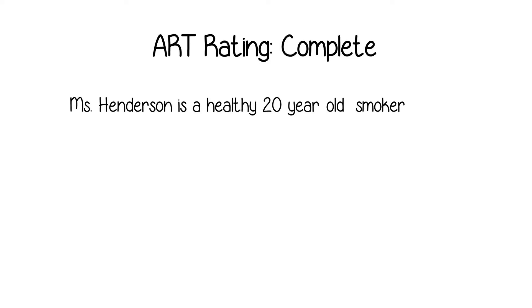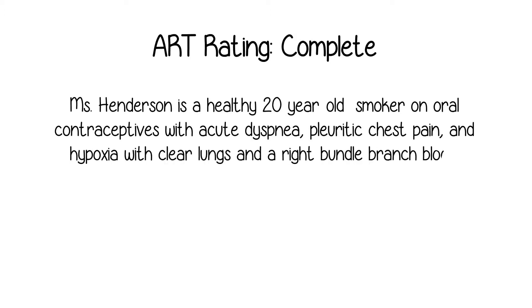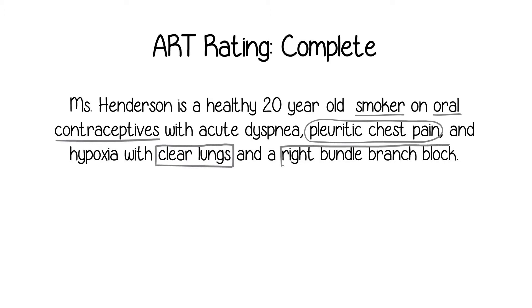This is an example of a high performer, which you would mark as complete on the ART. Ms. Henderson is a healthy 20-year-old smoker on oral contraceptives with acute dyspnea, pleuritic chest pain and hypoxia with clear lungs and a right bundle branch block. The high performer gives a concise summary with patient information such as being a smoker using oral contraceptives, describing symptom information such as pleuritic chest pain, and including highly selected data such as lung exam and conduction system changes. This problem representation allows the listener to trigger the most likely diagnosis of pulmonary embolism.